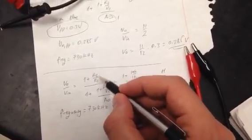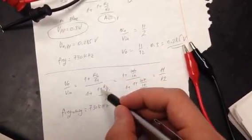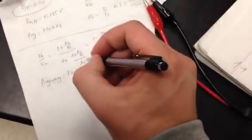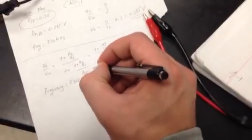1 plus R2 over R1, 1 plus R2/R1 divided by A0, which is 1 since bandwidth unity.